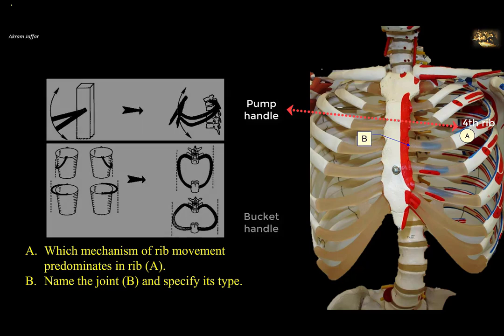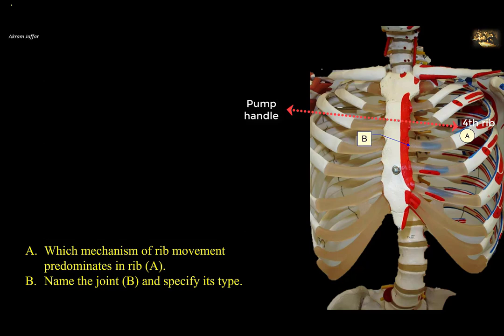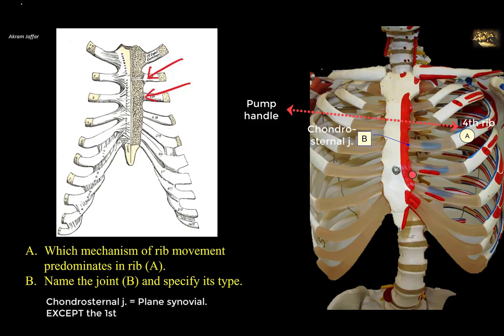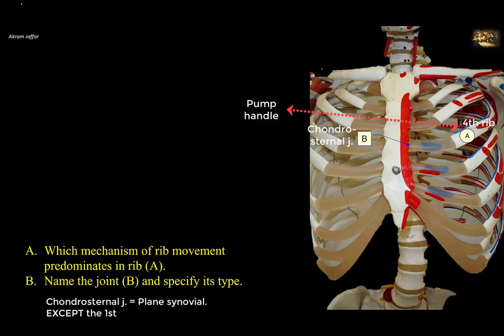Name joint B and specify its type. Joint B is a chondrosternal joint — between the costal cartilage and the sternum. Chondrosternal joints, except the first, are synovial joints of the plane variety. The first chondrosternal joint is a primary cartilaginous joint. So joint B, between the fourth costal cartilage and the sternum, is a plane synovial joint.